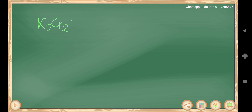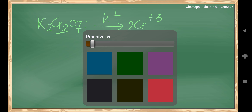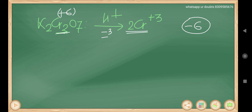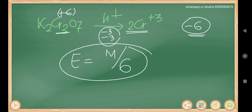For K₂Cr₂O₇, in acidic medium it changes to Cr³⁺. As there are 2 chromiums in K₂Cr₂O₇, and each chromium changes from +6 to +3 (a change of 3 each), the total change in oxidation state is 6. So the equivalent mass equals molecular mass divided by 6. Potassium dichromate in acidic medium: equivalent mass = molecular mass / 6.